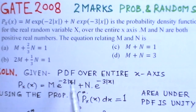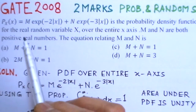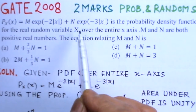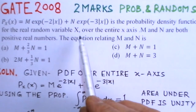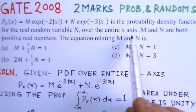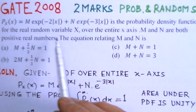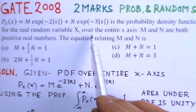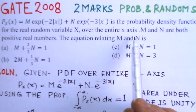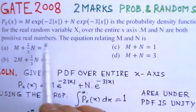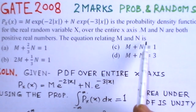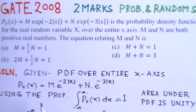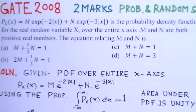So we first try to see what this problem is and what we have to find. The given expression is the probability density function for the real random variable x over the entire x-axis — that means from minus infinity to plus infinity — where m and n are both positive real numbers, and we have to determine the relationship between m and n.